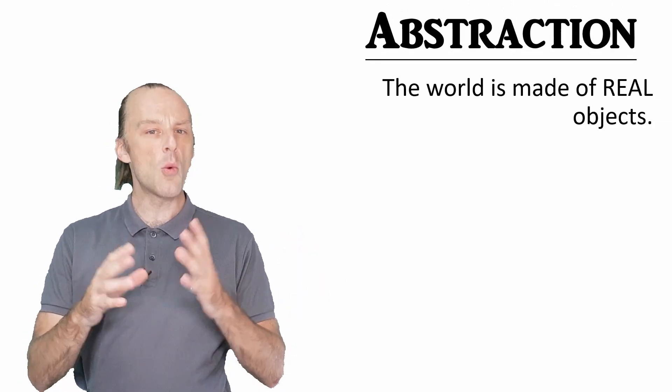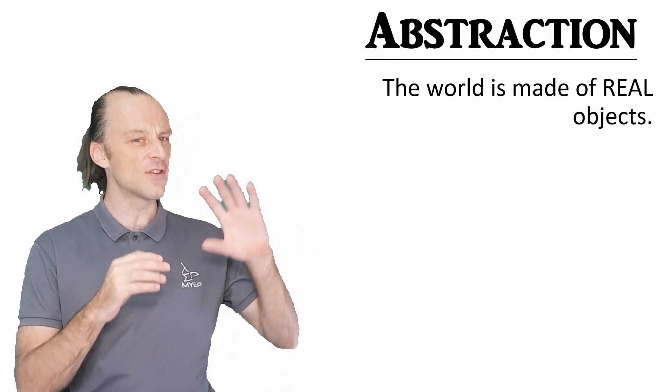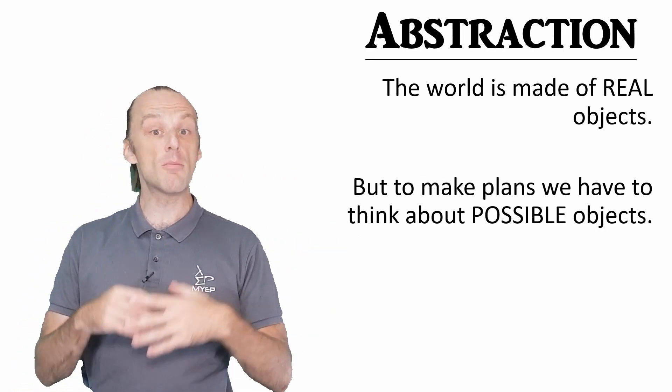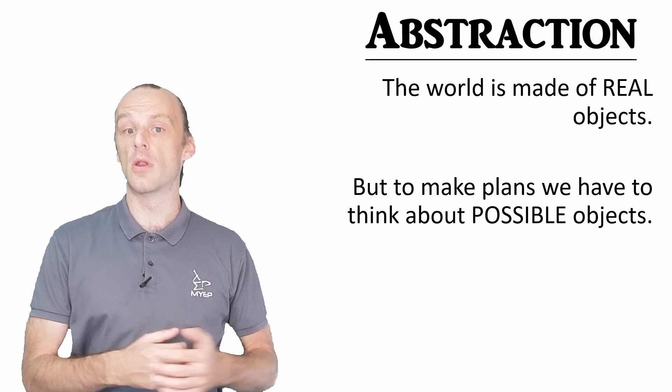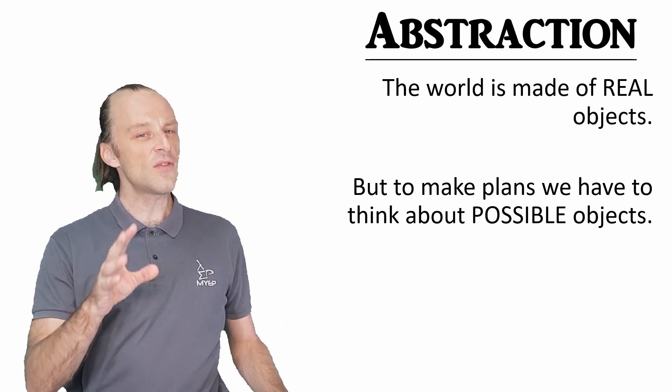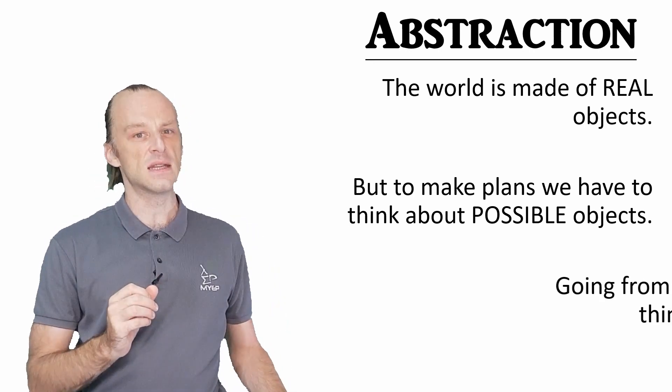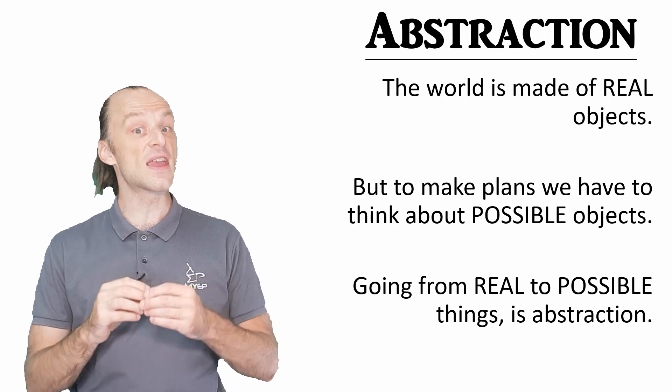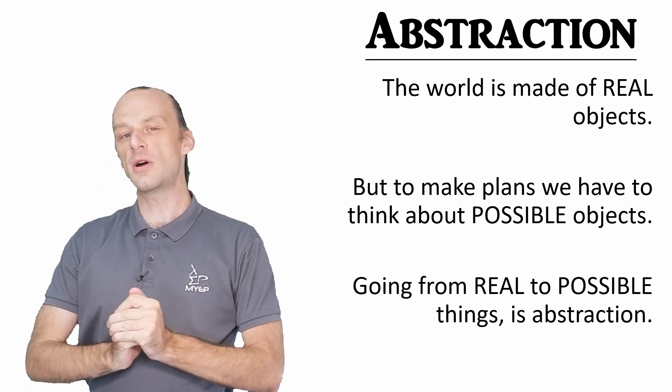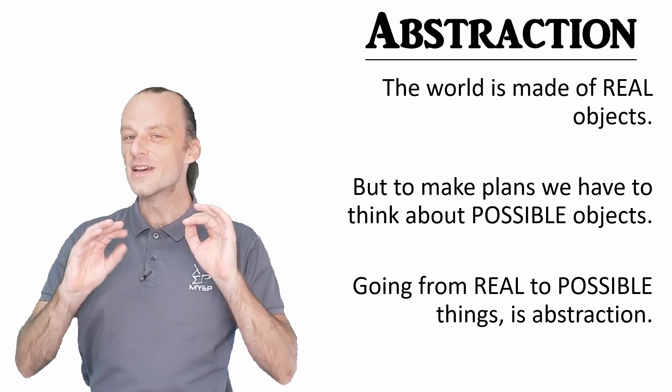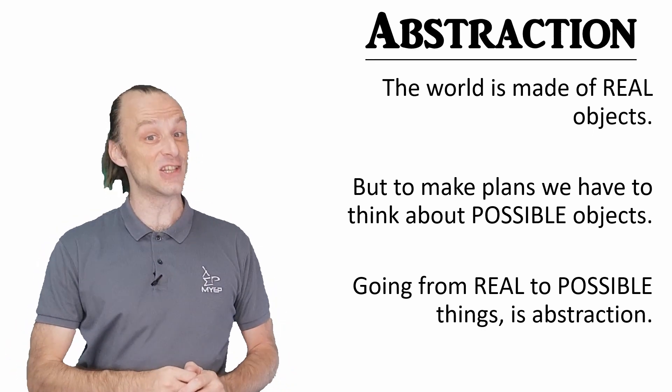The world is made of real objects that we can move around and use, but when we make any kind of plan for the future, we have to think about possible objects, or maybe possible ways that real objects can be. Whenever we think about possibilities in this way, we're making something abstract. We are moving away from the actual world, but we are hopefully doing it in an organised and useful way.